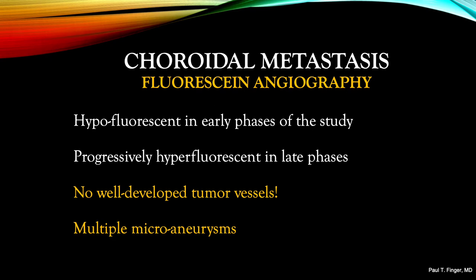Consider how the relative lack of formed blood vessels affects the tumor circulation on angiography. As fluorescein dye enters the eye, then through the normal chorioretinal circulation, the small, poorly formed tumor blood vessels fill more slowly, resulting in relative hypofluorescence in the early phases of the angiogram. However, these small, incompetent vessels leak progressively, increasing fluorescence through the duration of the study. The eye cancer specialist will not see any well-developed tumor blood vessels on angiography, but will see many hyperfluorescent dot-like microaneurysms.